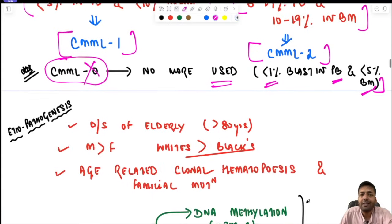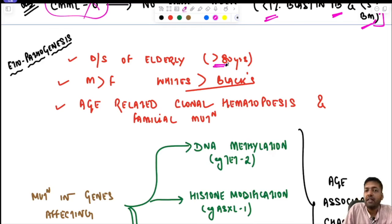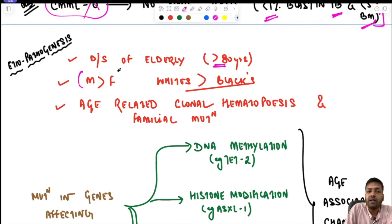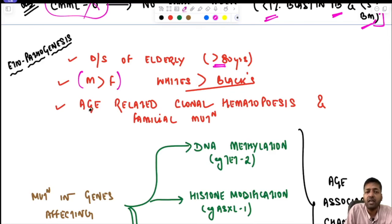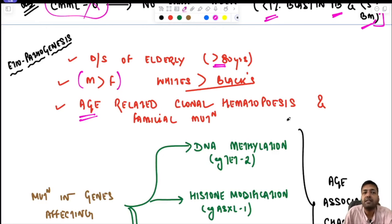CMML is a disease of the elderly, affecting individuals more than 80 years of age. Males are affected more than females, and whites more than blacks. It is associated with age-related clonal hematopoiesis and familial mutations.